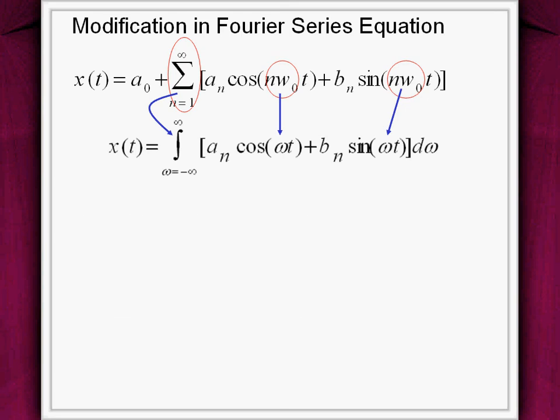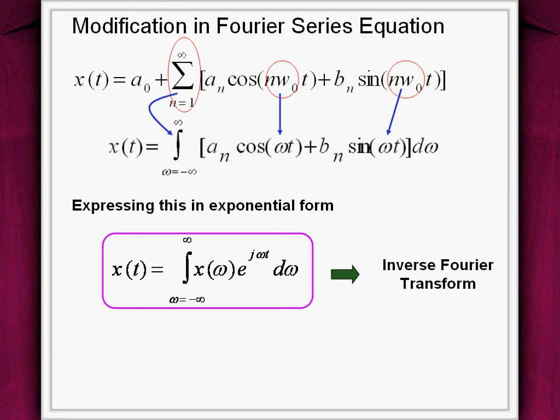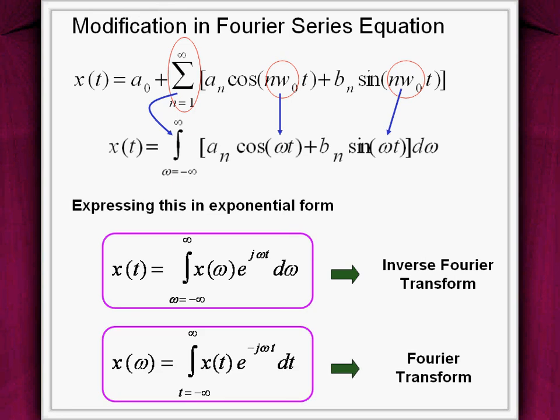This is further expressed in exponential form. X(ω) indicates the Fourier transform of the signal x(t).